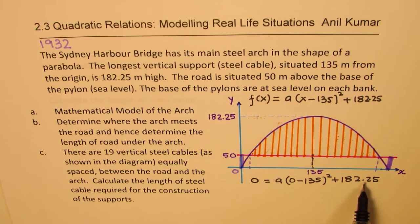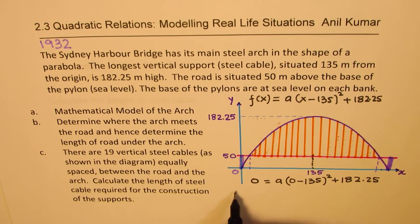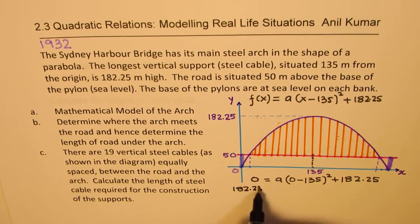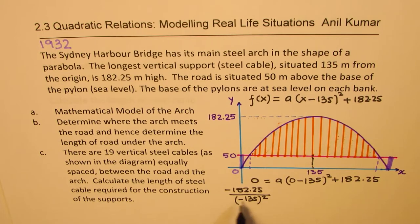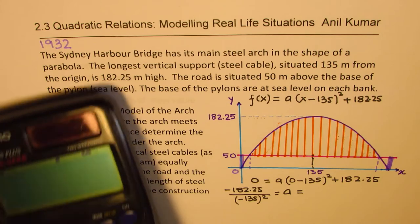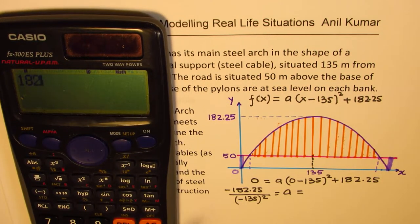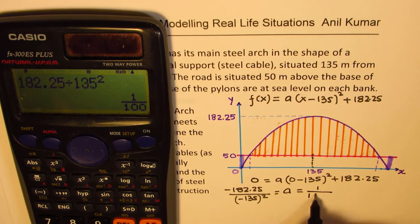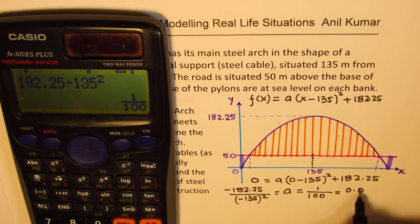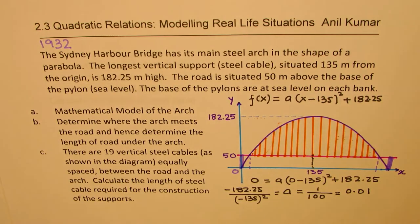Substituting (0, 0): 0 = a(0 − 135)² + 182.25. Taking 182.25 to the left side and dividing by 135 squared, we get a = −182.25 / 135². This value is very interesting — 182.25 divided by the square of 135 equals 1/100. So the value of a is 1/100, or 0.01, making it −0.01.